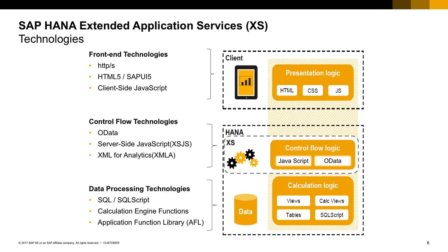So let's have a look at all the technologies involved in an SAP HANA application. Starting at the bottom, in the calculation layer — this is where all your business logic and heavy workloads are going to be processed. You can use SQL script, HANA stored procedures and HANA views to handle those processes. For example, imagine a fixed-asset depreciation scenario.